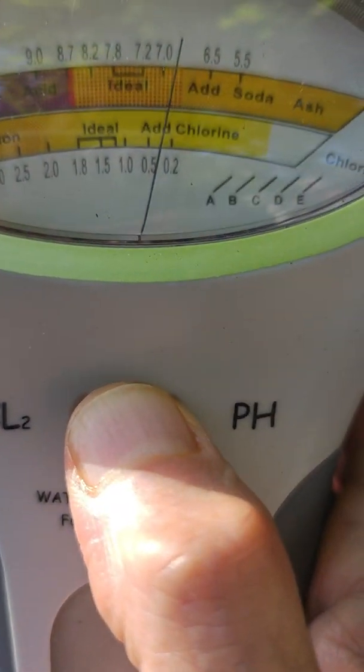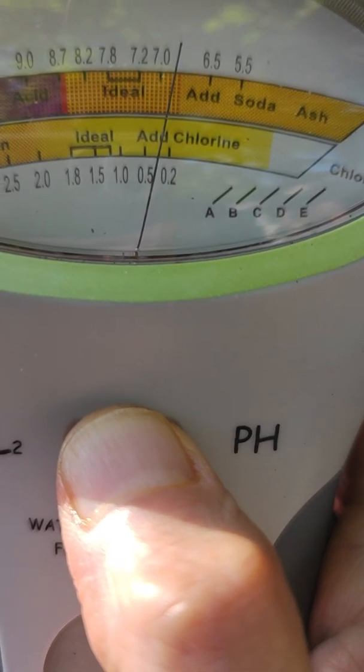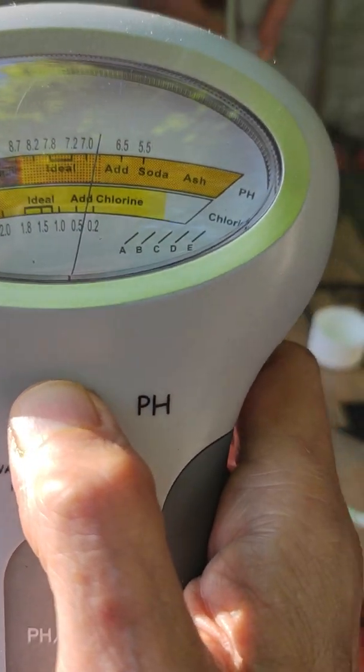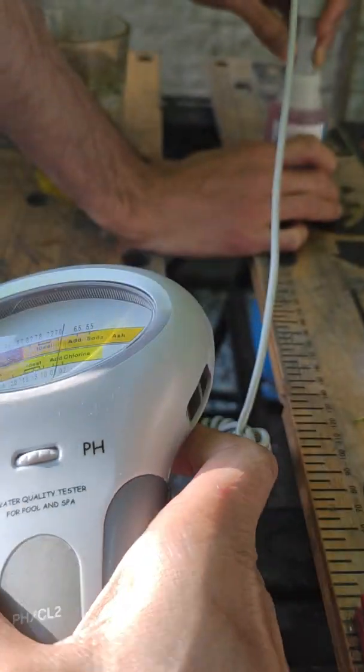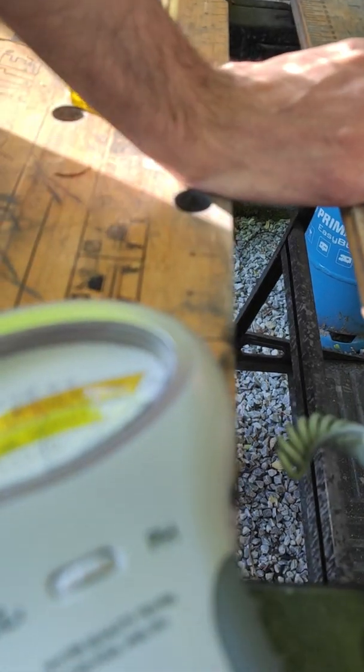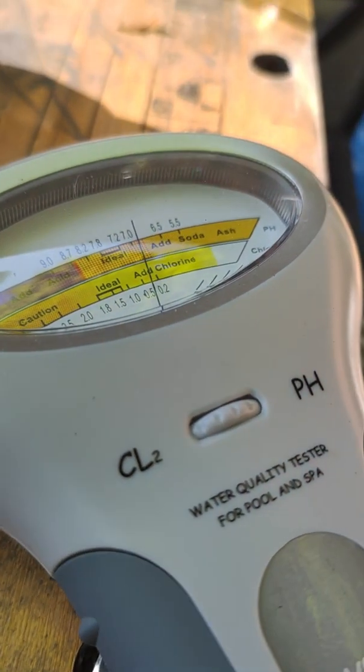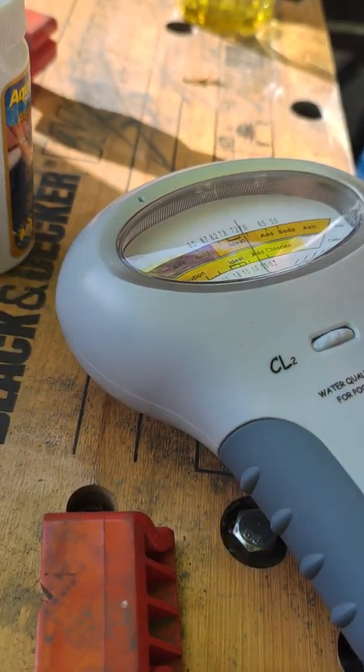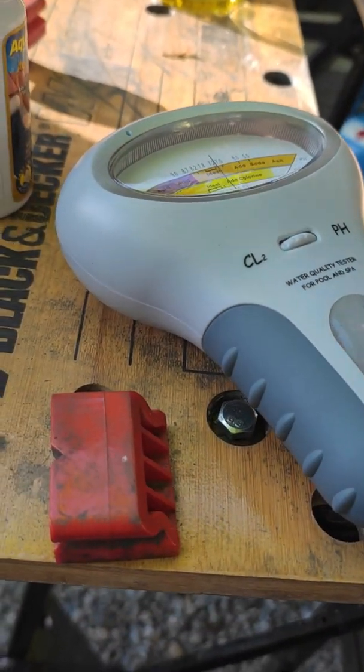It is showing close to seven, whereas that is calibration fluid for four. So neither the chlorine or the pH are working.